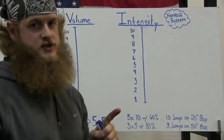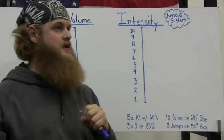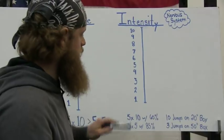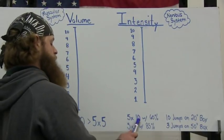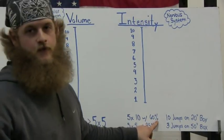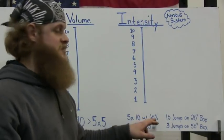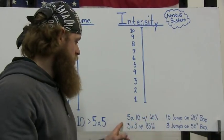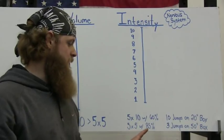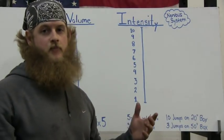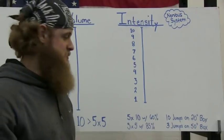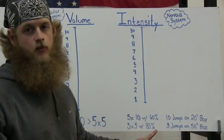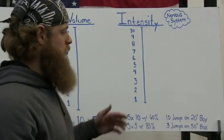Intensity can be two things: the amount of weight being used, and the speed at which you're moving the weight. If you were doing five sets of ten with sixty percent of your max, that would be sixty pounds of a hundred pound max. Versus five sets of five with eighty-five percent — eighty-five pounds of your hundred pound max. Five sets of five would be higher intensity because you're using more weight.